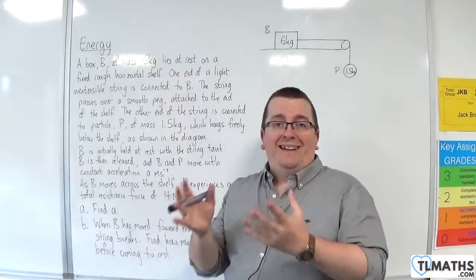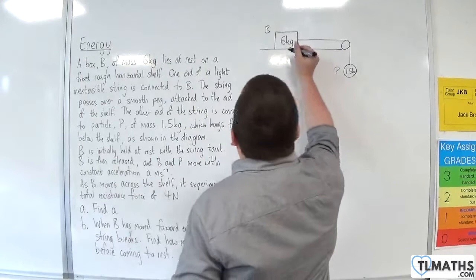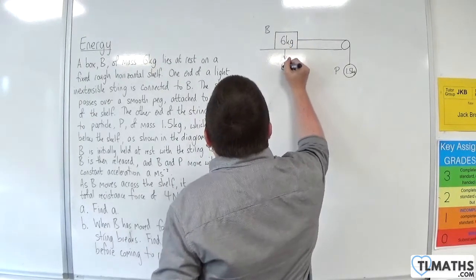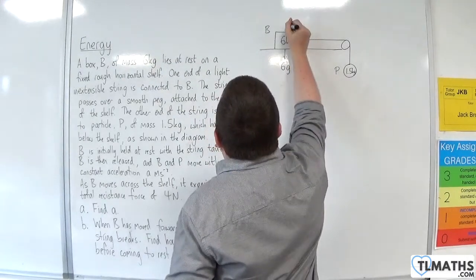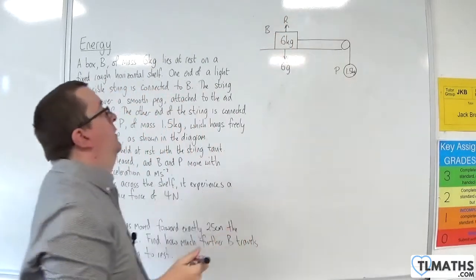OK, so what I'm going to do is I'm going to annotate the diagram as we go. So, we have a weight of 6g and a vertical reaction force, R.